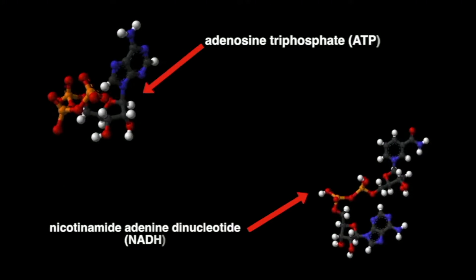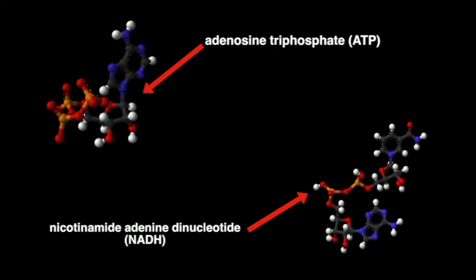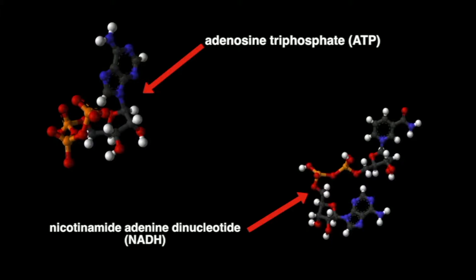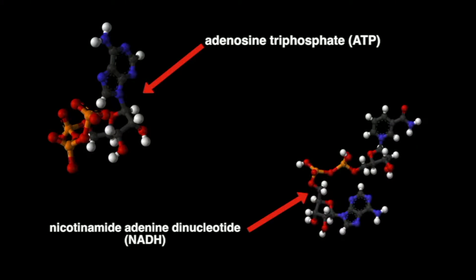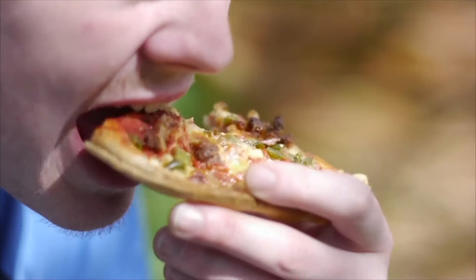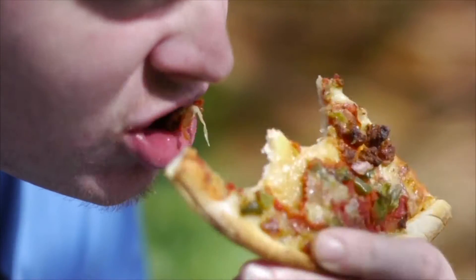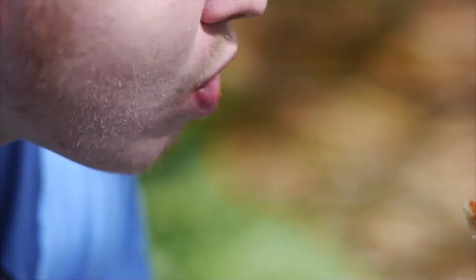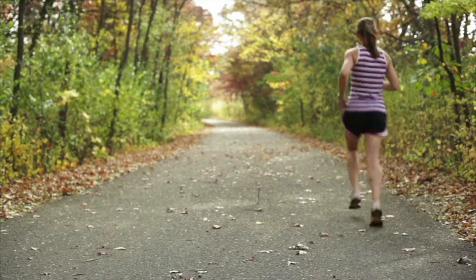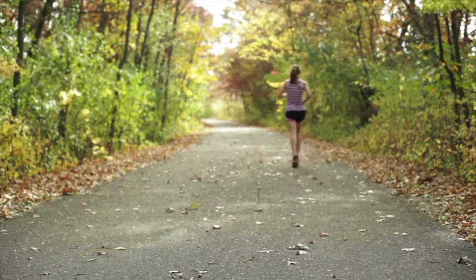Cells use energy in the form of adenosine triphosphate, or ATP, and a reduced form of nicotinamide adenine dinucleotide, or NADH. Cellular respiration is the process of taking the food we eat and converting it into energy that can be used by cells as ATP.